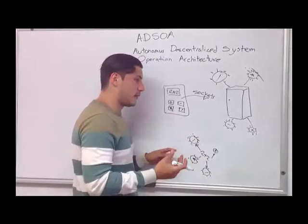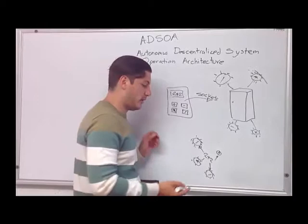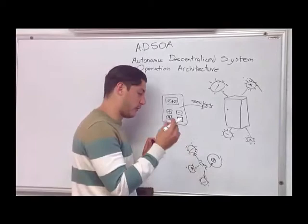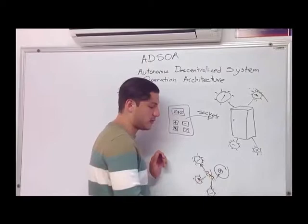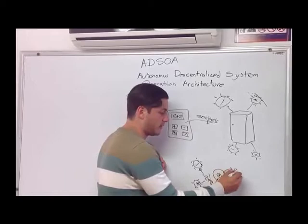But who is the only one that is going to respond to that operation? The addition cell — because the division cell will drop it, the subtraction cell will drop it, and the multiplication cell will drop it. The only one that is going to operate is the addition cell. So we get 2 plus 2 is 4.